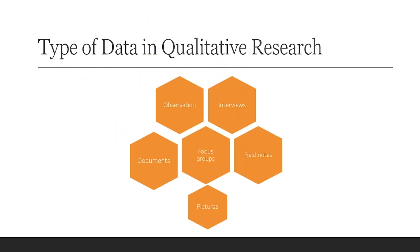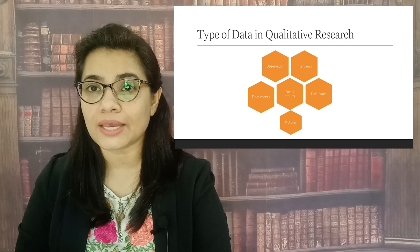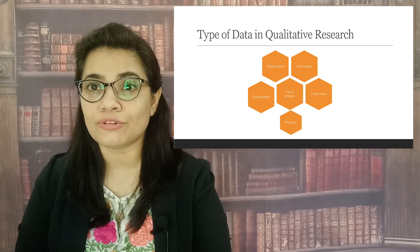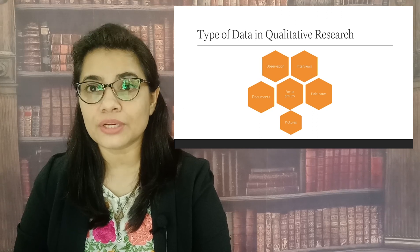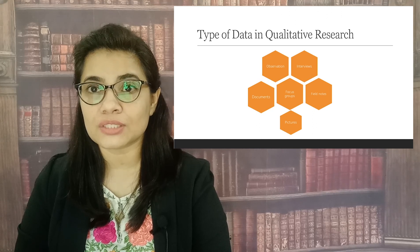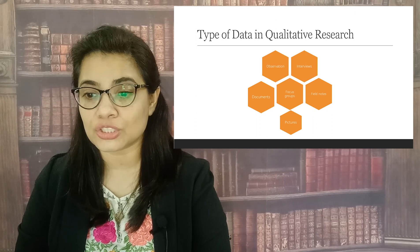There are different types of data. For example, we collect data from interviews, we collect data from field observation, then we collect data from pictures, we collect some of the relevant documents related to our research, and we also collect some of the field notes from the research site. We also conduct focus groups, which is a one-to-many data collection technique in qualitative research.